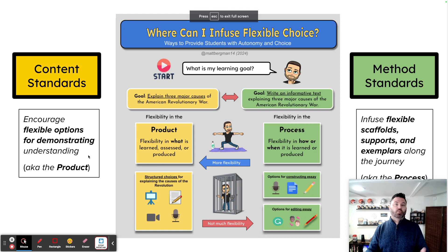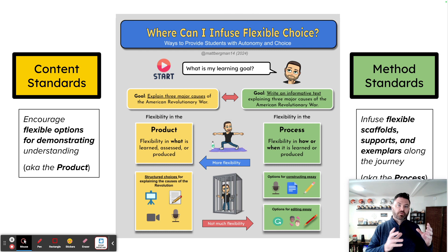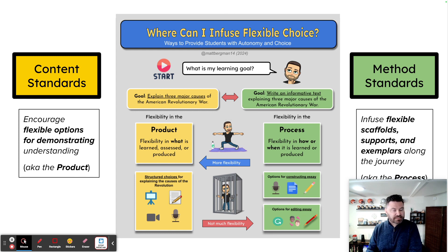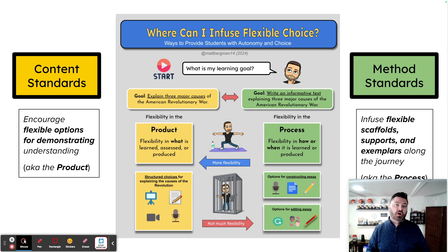So, how can you provide flexible choice? You can do it in the product or the process. When we're flexible in the product, it's typically a content standard — we want students to know something, so they can demonstrate it in flexible ways. When it's flexibility in the process, they have to create the essay, solve the math problem, or complete a specific task, but there might be flexible ways along the journey. Hopefully that helps you as you're designing flexible options for students with the UDL framework in mind. Have fun!